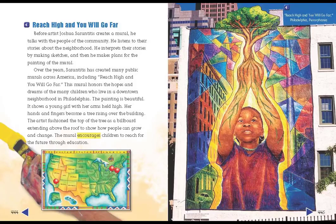This mural honors the hopes and dreams of the many children who live in a downtown neighborhood in Philadelphia. The painting is beautiful. It shows a young girl with her arms held high — her hands and fingers become a tree, rising over the building. The artist fashioned the top of the tree as a billboard, extending above the roof, to show how people can grow and change. The mural encourages children to reach for the future through education.